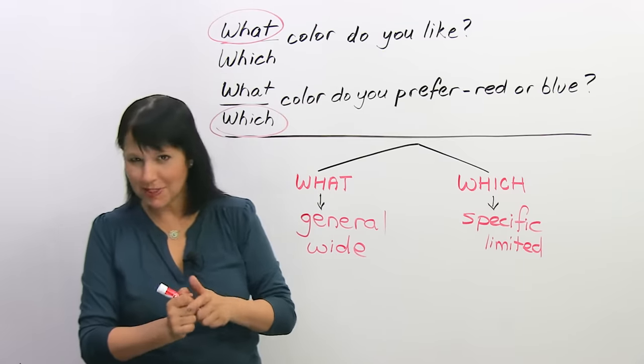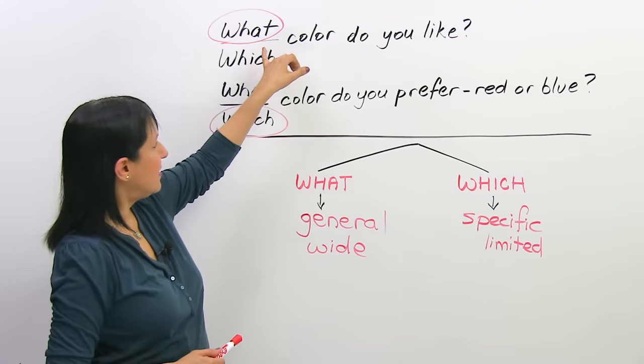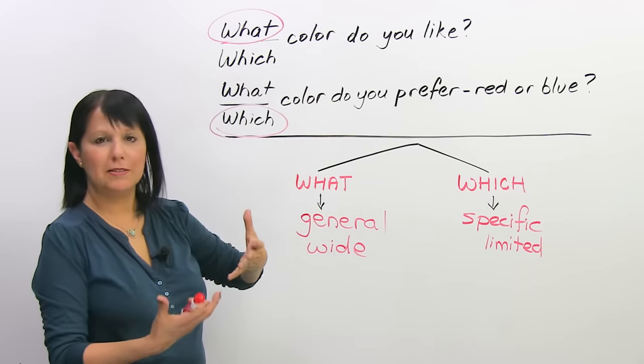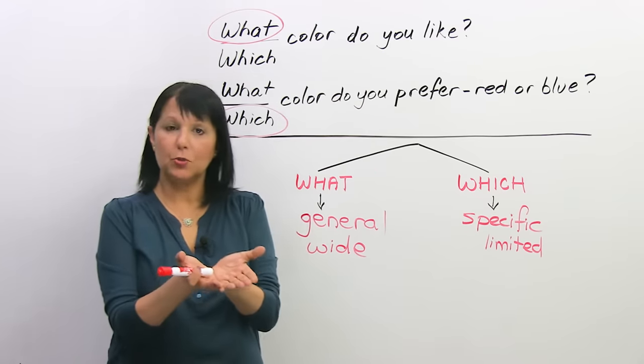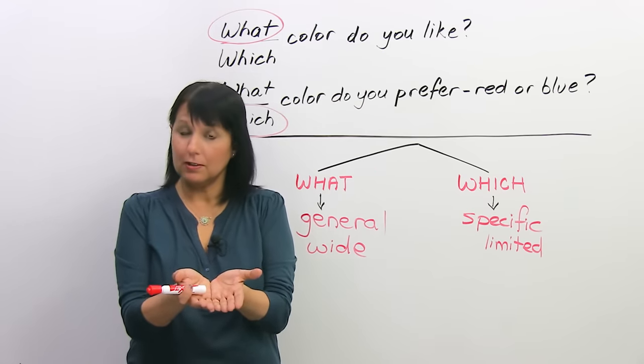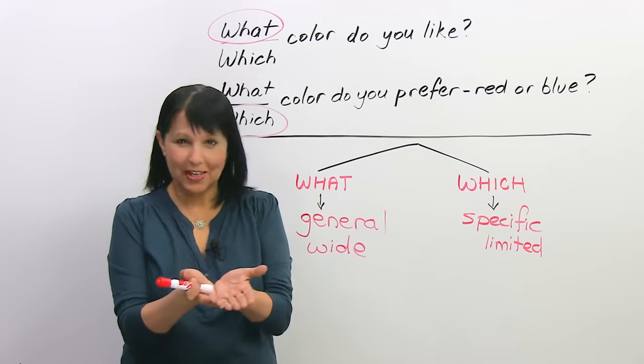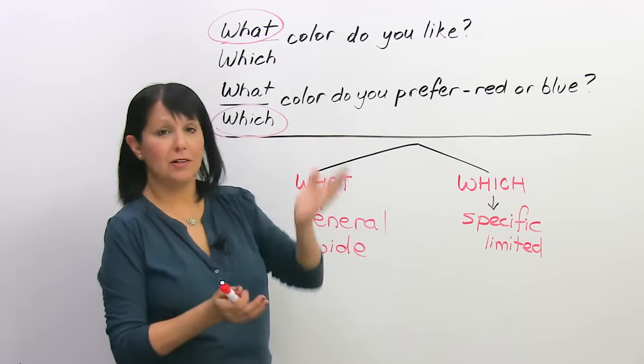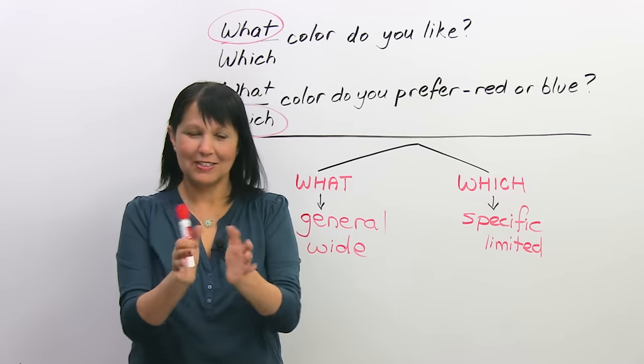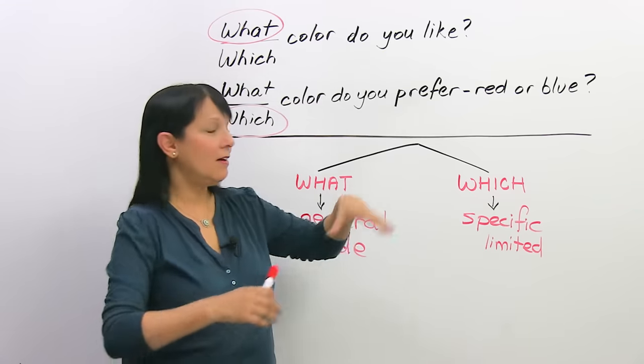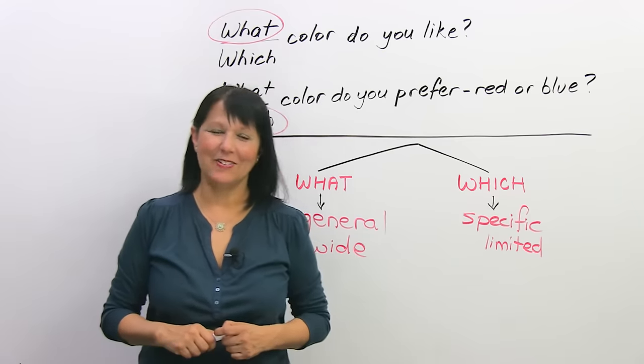Now, just to explain, in this one, for example, I said that the probable answer is 'what color do you like?' But, if I showed you a card which had four colors, and now it's limited, right? So then I could ask you 'which color do you like?' Because it's out of these four, so it becomes limited and not 'what color' out of all the colors in the world.